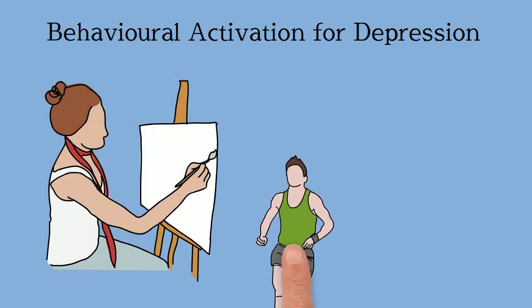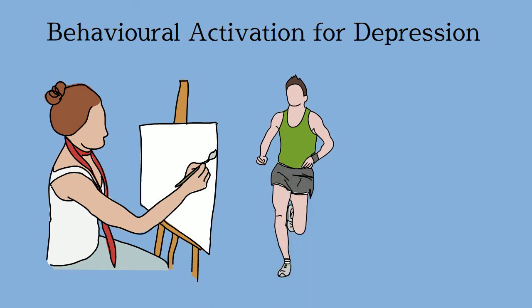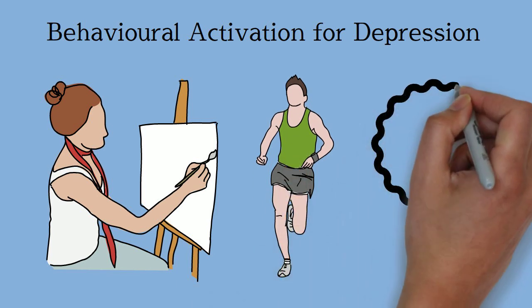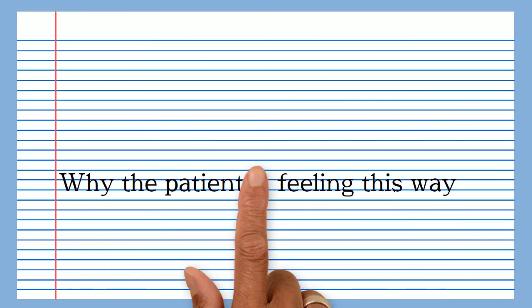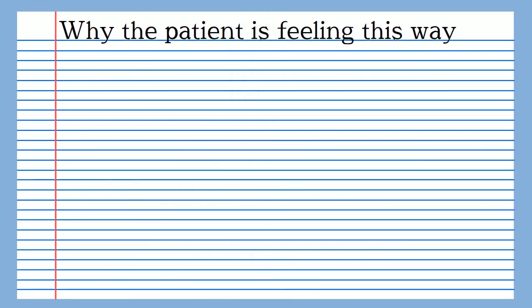In a nutshell, what behaviour activation claims is that by increasing the amount of positive experience in our lives — for example enjoyment and achievement — we can improve our mood. The first step of any treatment intervention should be psychoeducation, where you're supporting the patient to understand the symptoms they're currently experiencing. Good treatment psychoeducation should always contain two elements. Number one: why the patient is feeling this way.